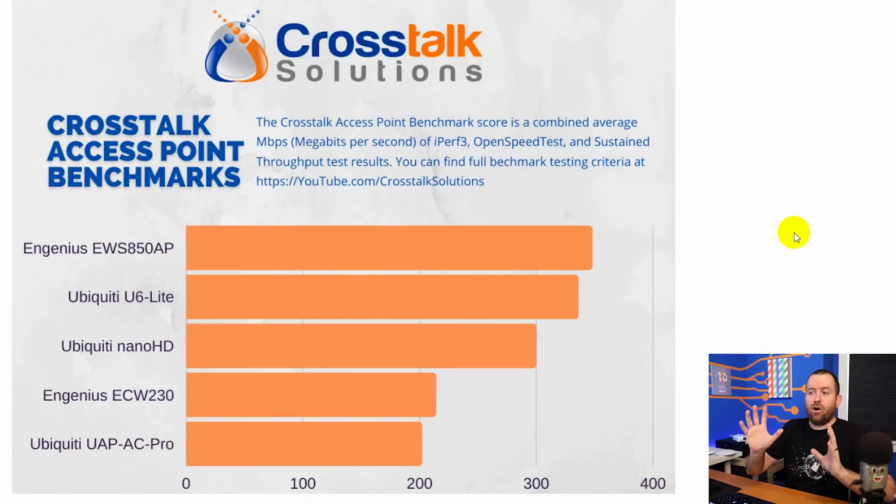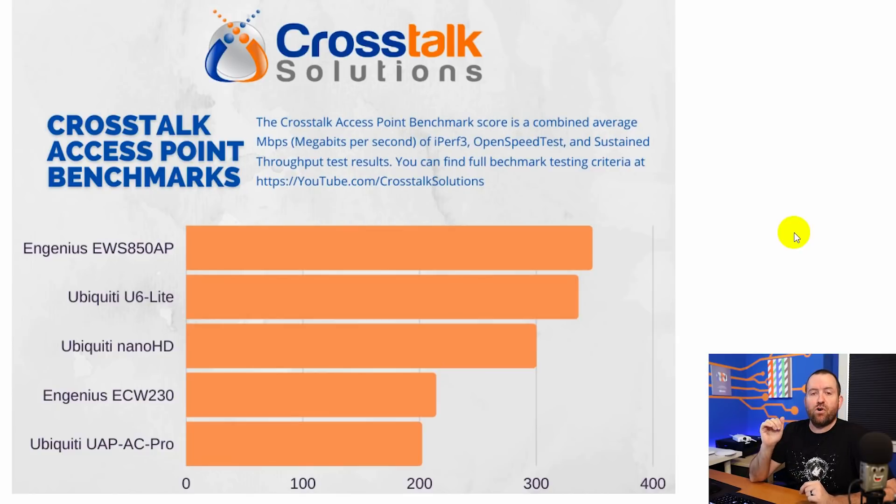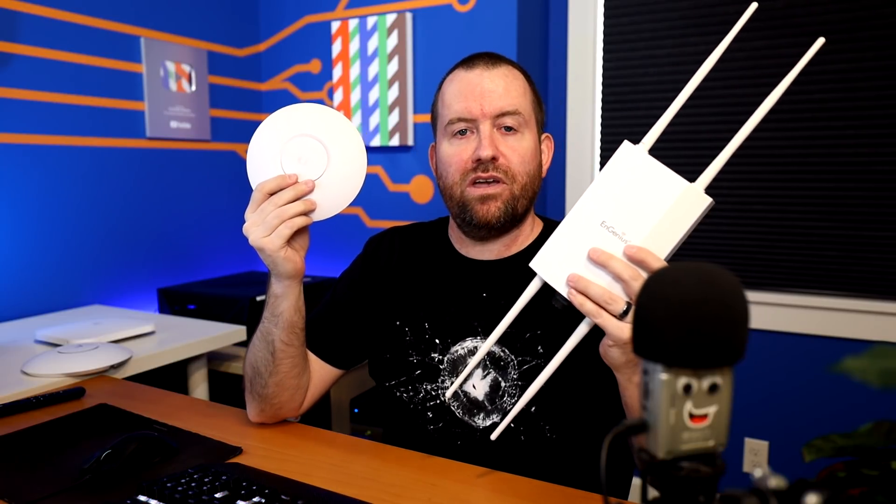So how do we come up with a final benchmark? I took the final results from each of these three tests — the distilled megabits per second for each — and averaged that number across the three tests to come up with the final benchmark score, which we're calling the Crosstalk Access Point Benchmark. Coming out on top, the Ingenious EWS850AP had the best overall average megabits per second across all our testing, at 348 megabits average, followed closely by the Ubiquiti U6 Lite at 336 megabits average.